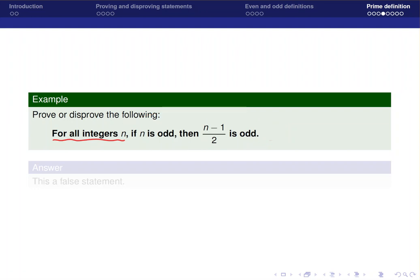However, if I want to show that this statement is false, what I have to do is find a counter example. In other terms, I have to find an integer that is odd that does not make n minus 1 divided by 2 also odd.